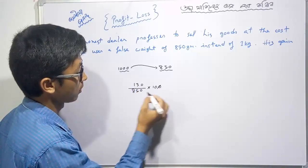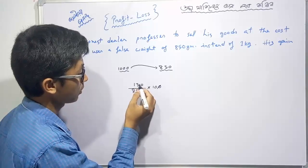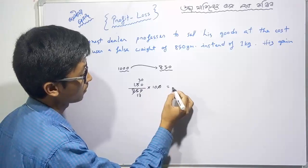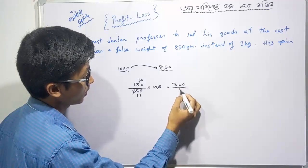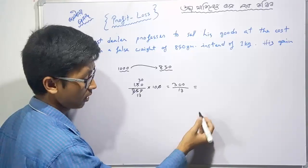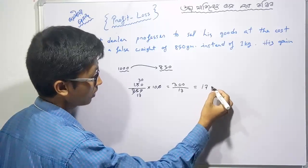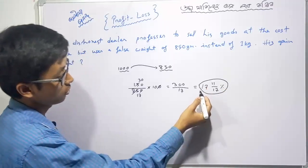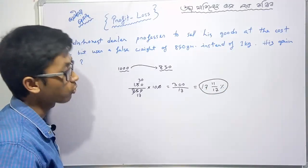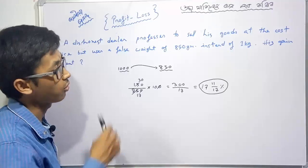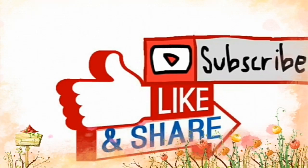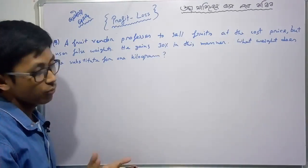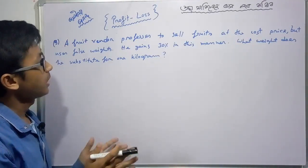The profit calculation: 1000 minus 850 equals 150 grams difference. This gives 17.65% profit, which is approximately 17 and 11/17 percent.